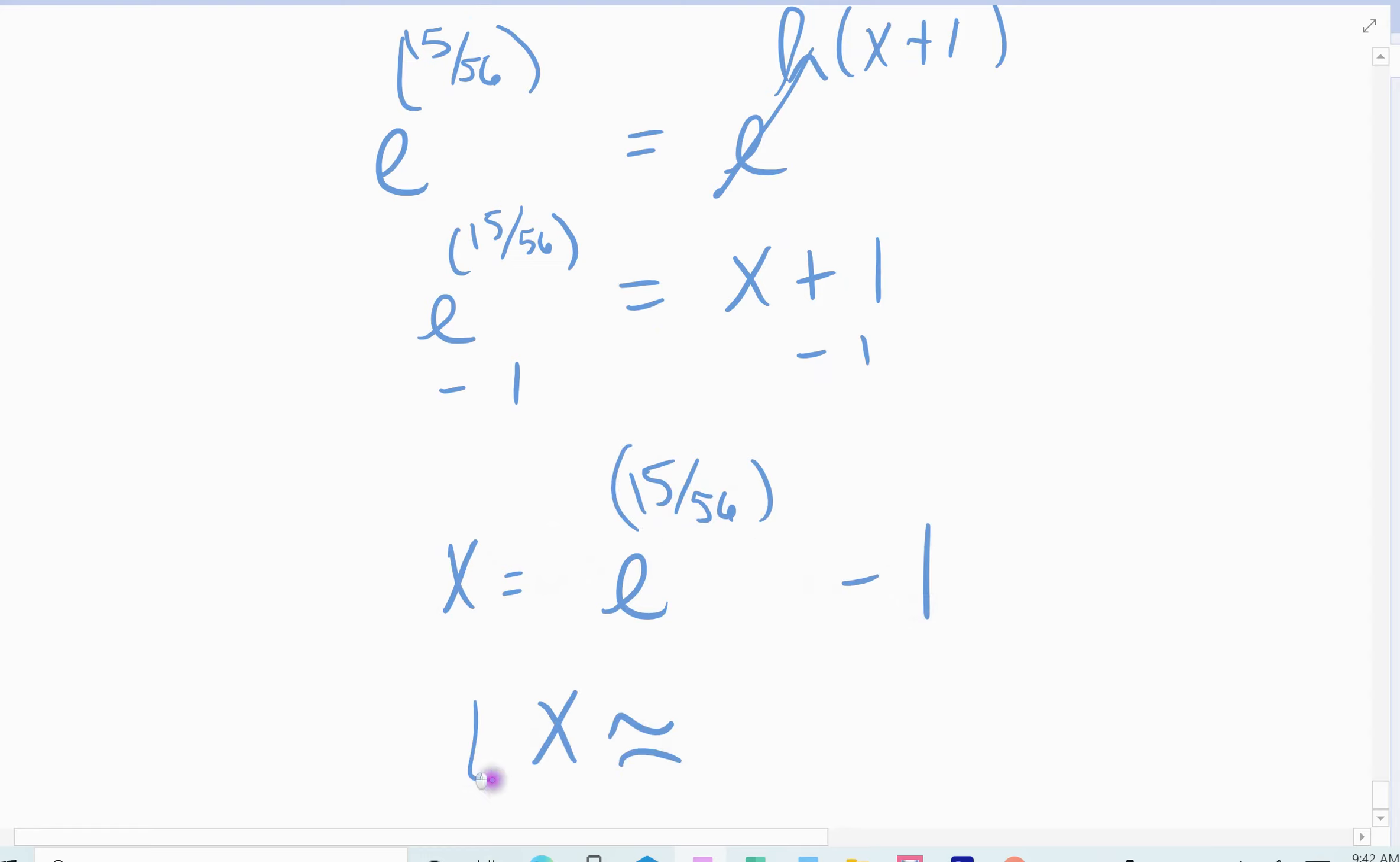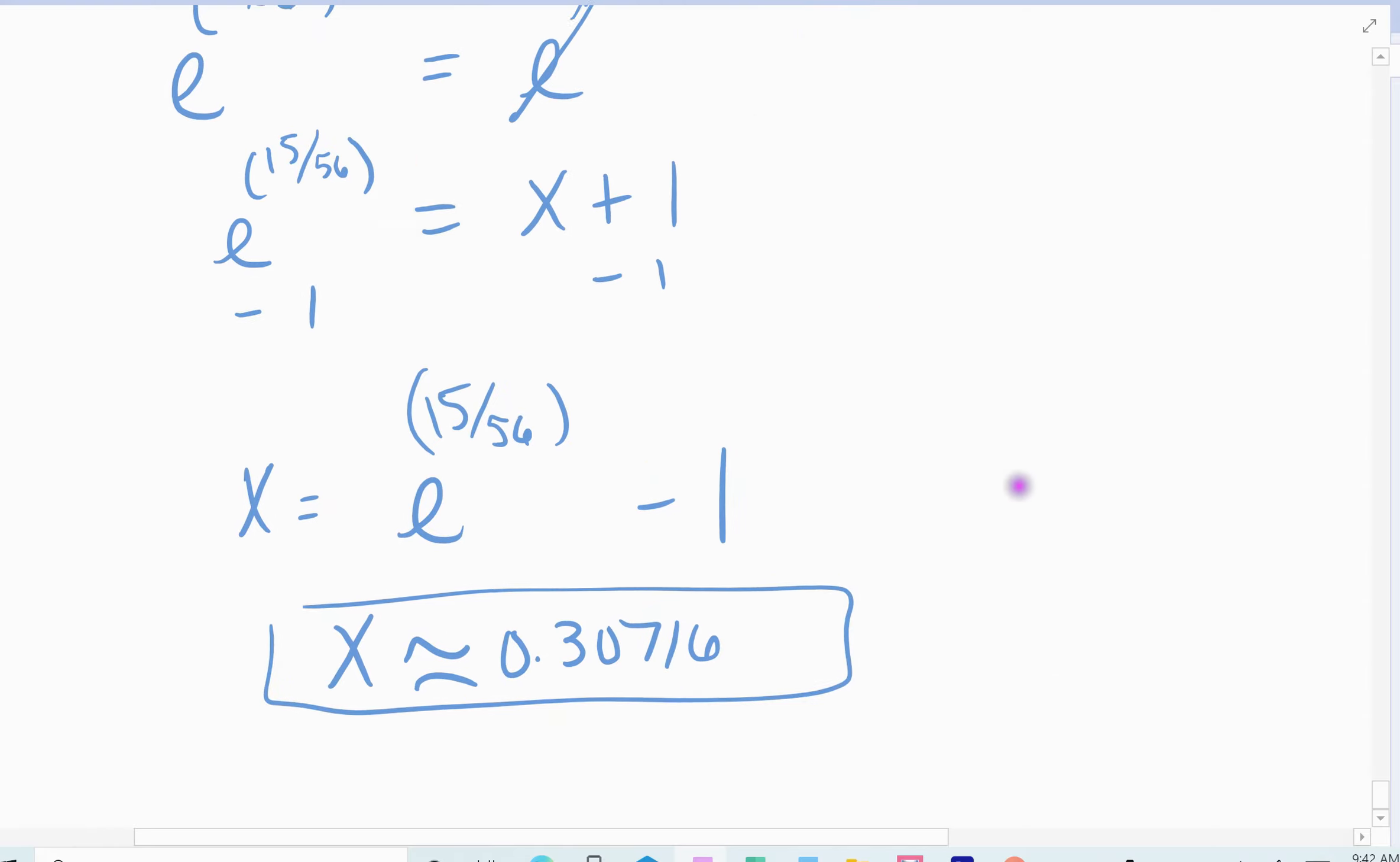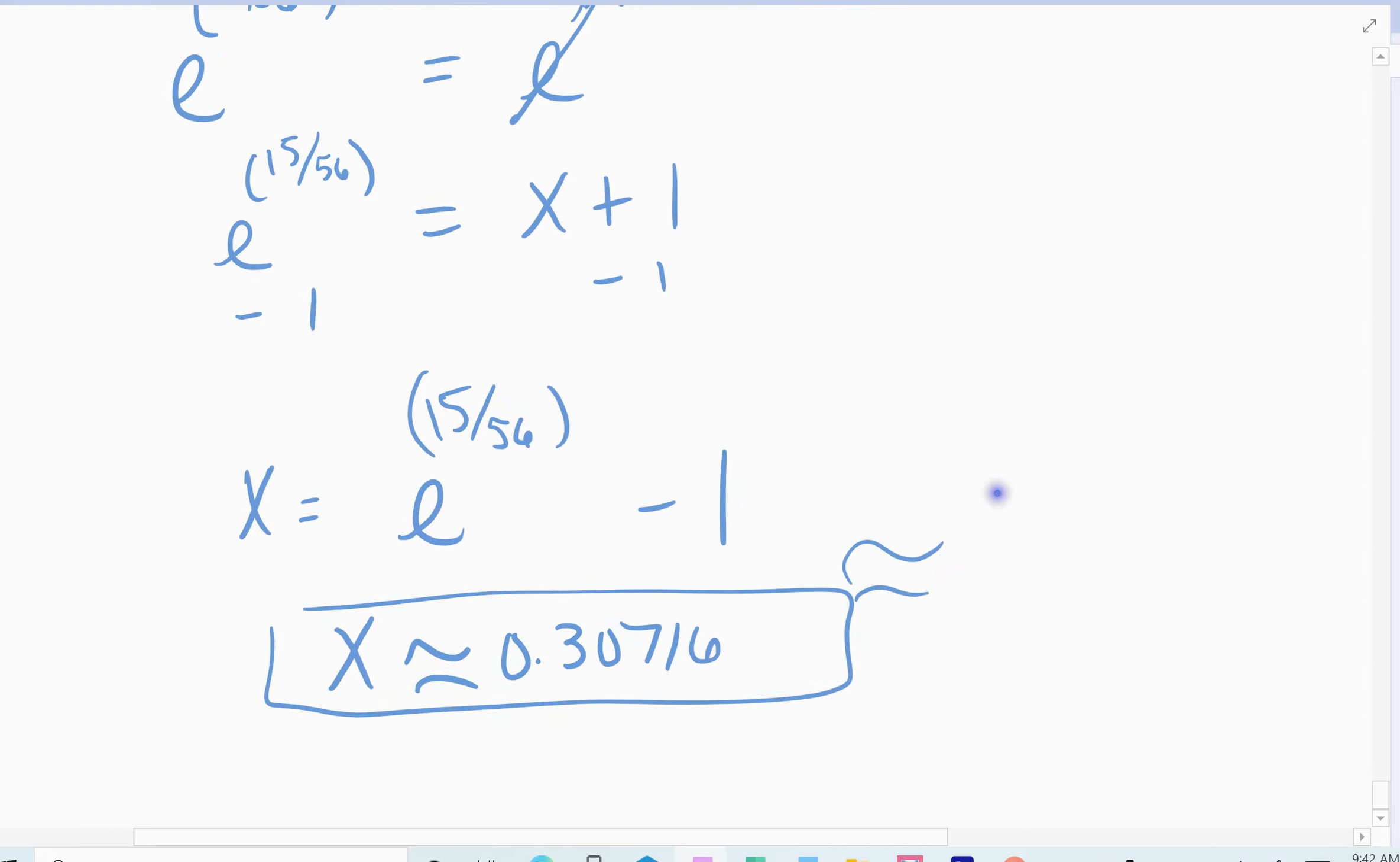And then subtract 1 from both sides. And so x equals e raised to the 15 over 56 minus 1. That's exactly what x is equal to. And then we go ahead and find the approximate answer. And so we get our e term, raise it to the fraction, and subtract 1. And so it comes out 0.30716. And so if I round a couple decimal places, it comes out to 0.31. So about 0.31 acres were owned.